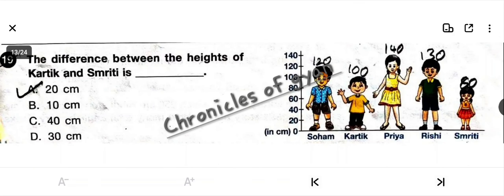Question 19: The difference between the heights of Karthik and Smriti is blank. Karthik's height is 100 cm and Smriti's height is 80 cm. The difference is 100 minus 80 = 20 cm. The answer is option A: 20 cm.